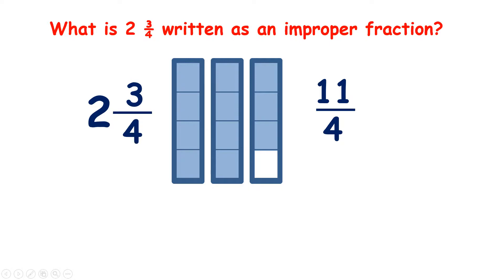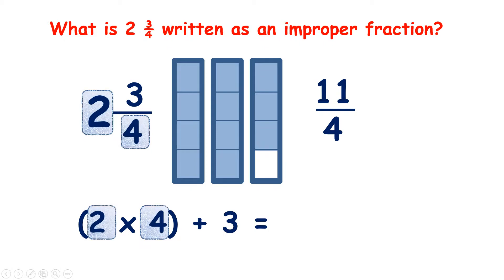But to convert mixed numbers to improper fractions, we don't always have to draw out bars. Instead, we can do 2 times 4, so that's multiplying the whole number by the denominator, that gives us 8, and then we can add the numerator, so add 3. Now 8 plus 3 is 11, and that tells us what number will be in our numerator in our improper fraction, and the number in the denominator just stays the same.